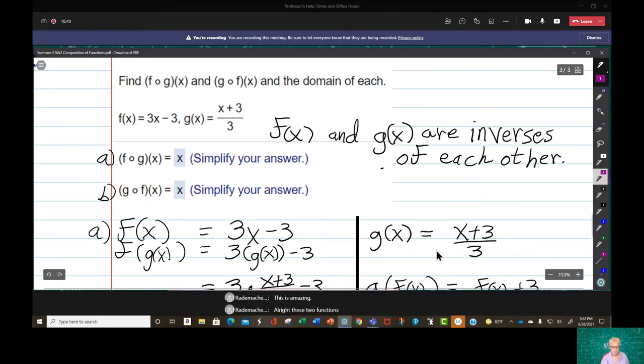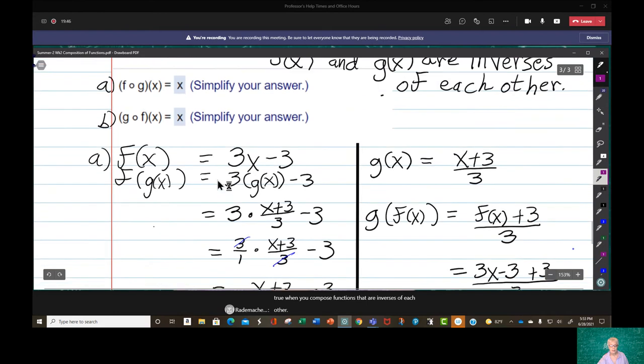All right. These two functions, f of x right there and g of x right here, have a very special relationship. They're inverses of each other. They are inverse functions of each other. And so something wonderful is going to happen when I take f of g of x and g of f of x. Looking ahead, notice that f circle g of x equals x. And g circle f of x equals x. That will always be true when you compose functions that are inverses of each other. So let's do it.